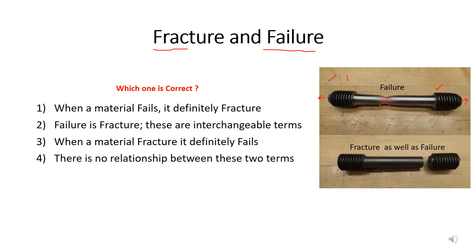Here we will say that the material has failed — you cannot use the same sample to perform a similar test again. In the second case, the same component under tensile loading has been broken down into two parts. When a component breaks into two parts, we say it is fractured, and if a component is fractured then it is also failed. The first point says that when a material fails, it definitely fractures.